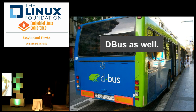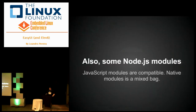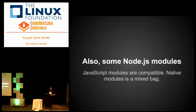We also have DBus. The API is pretty much like Python DBus — basically the same API, which is a very simple API to use. Also, some Node.js modules are compatible as well. Pure JavaScript modules are 100% compatible, and native modules are a mixed bag because some of them rely on different main loop implementations, which can make them incompatible, but it is somewhat compatible with native modules.